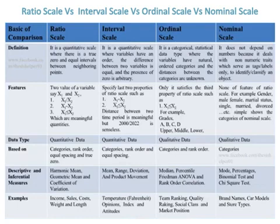Ratio scale is based on categories, rank order, equal spacing, and true zero. Interval scale is based on categories, rank order, and equal spacing. Ordinal scale is based on categories and rank order, while nominal scale is based on categories only.